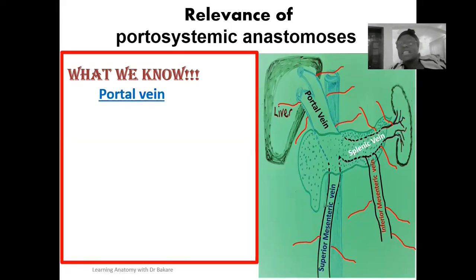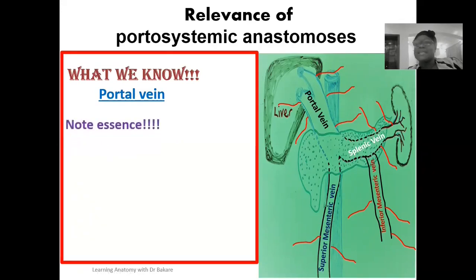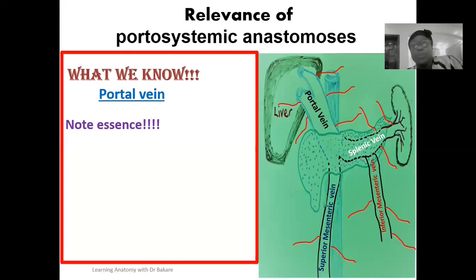The major tributaries — the splenic vein and the superior mesenteric vein — also receive secondary or sub-tributaries. The blood that the portal vein and its tributaries carry is deoxygenated but rich in nutrients, and this blood is directed into the liver. The liver picks up the nutrients contained within this blood and uses them as raw materials to produce its own finished products.